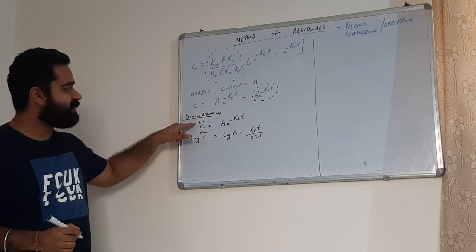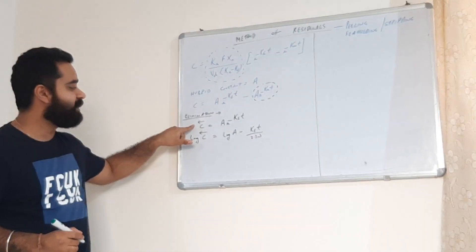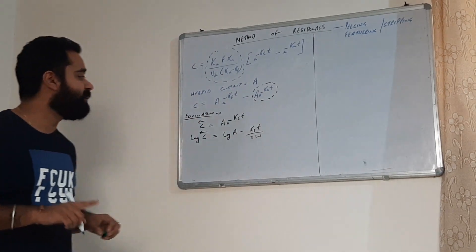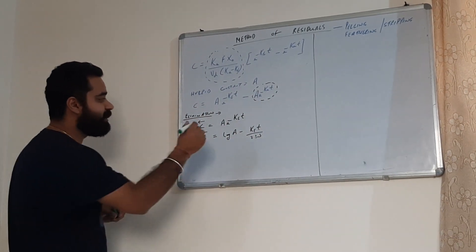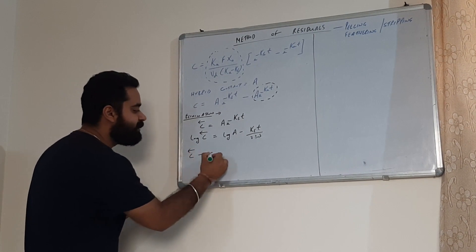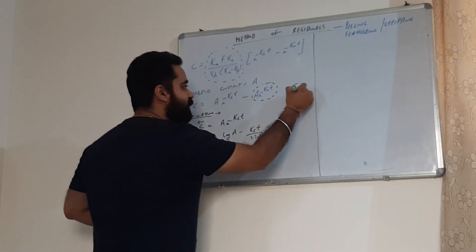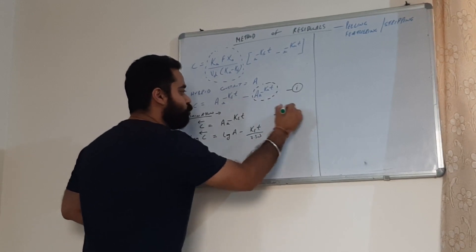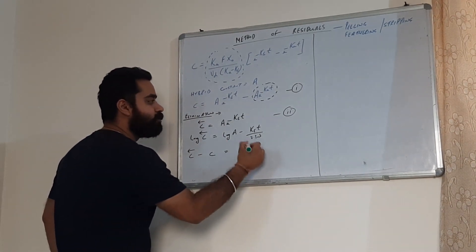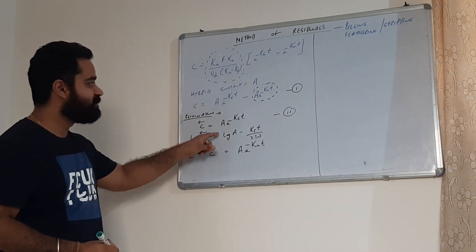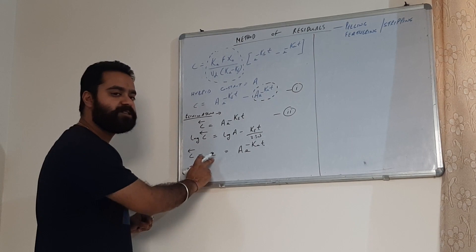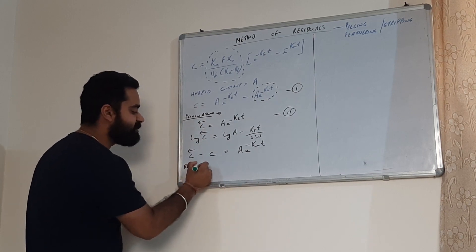The reverse arrow on top of C indicates the back extrapolated value. Now, if we subtract the true concentration value from the back extrapolated concentration — consider the back extrapolated equation as equation 1 and the true concentration as equation 2 — then C̄ (back extrapolated) minus C equals A·e to the power minus Ke·t, since the Ke terms cancel out. This value, the back extrapolated minus the true concentration, is called the residual concentration.